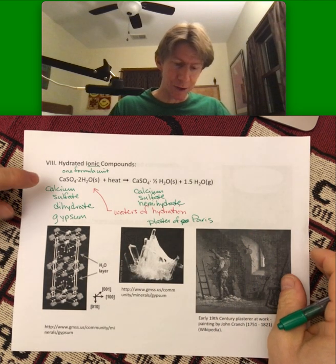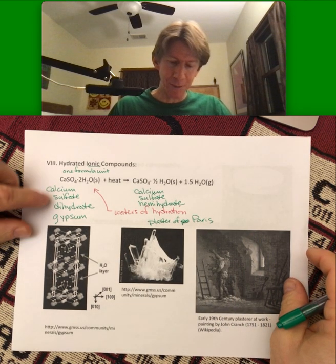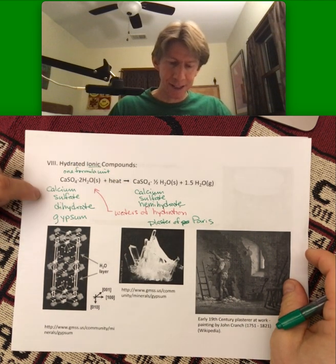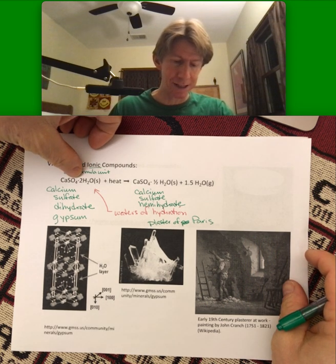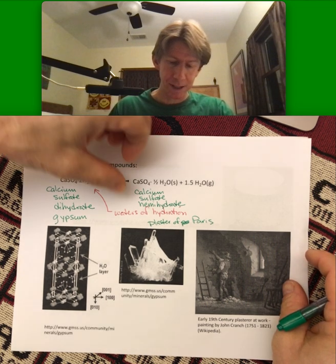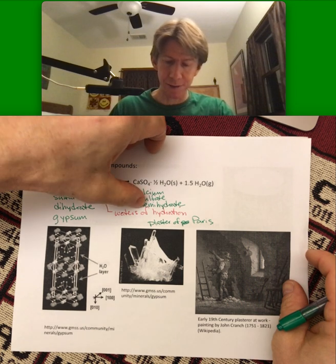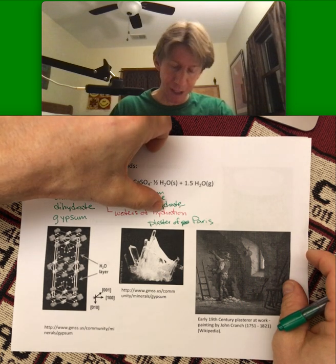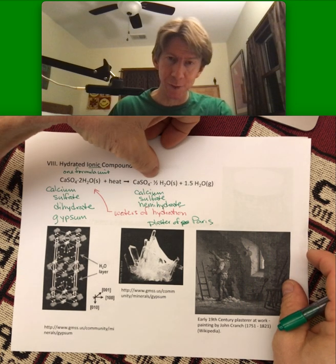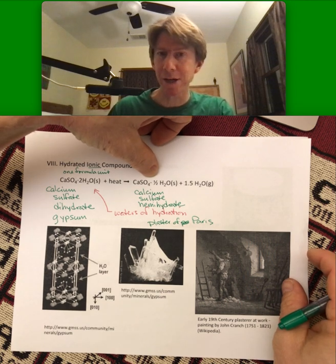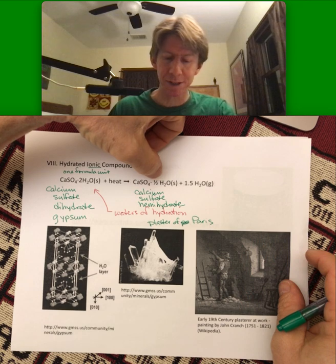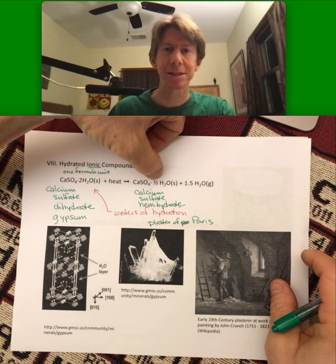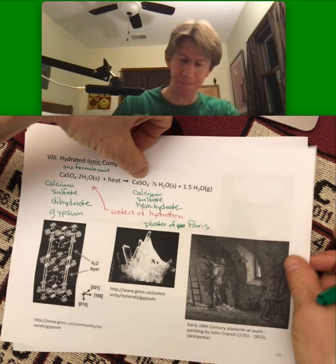What we're focusing on is the naming of these — that adding heat to a hydrate causes the waters of hydration to leave the formula. In general, you can get all of them off, but here you're still having half still attached to the calcium sulfate.